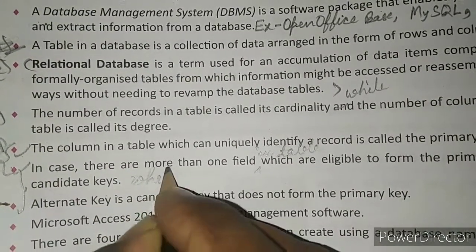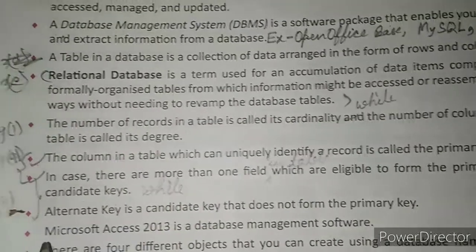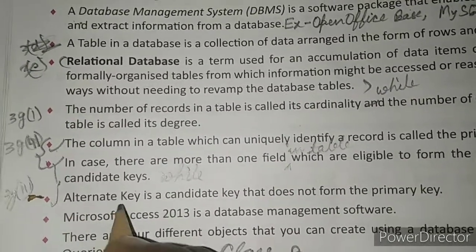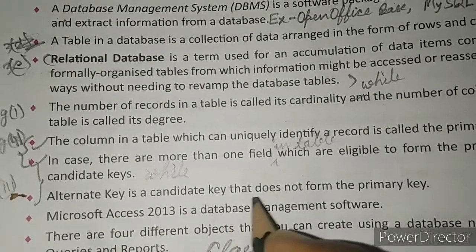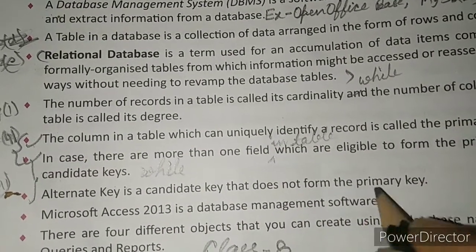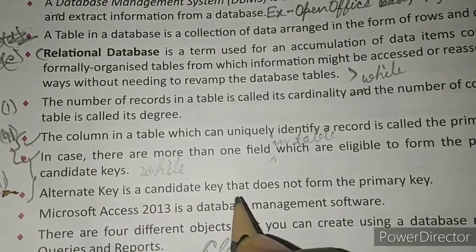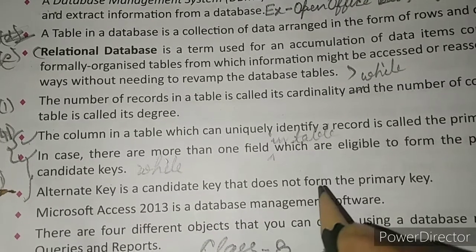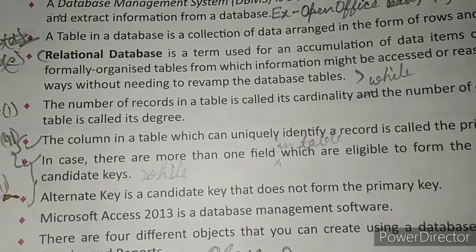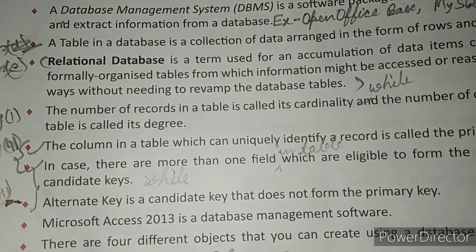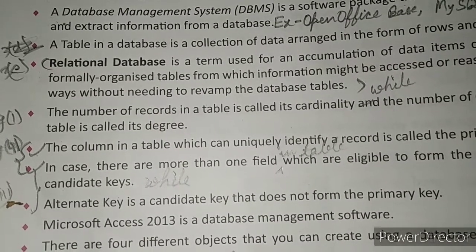While alternate key is a candidate key that does not form the primary key. This is how you can write the difference between candidate key and alternate key.